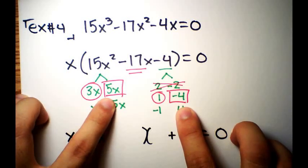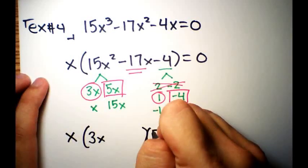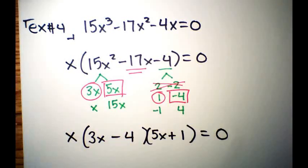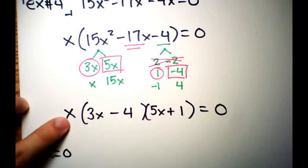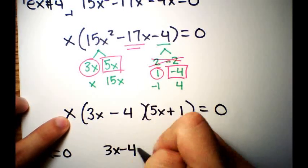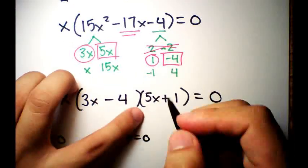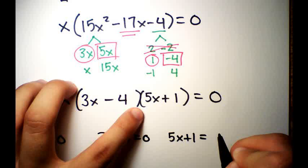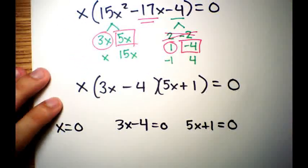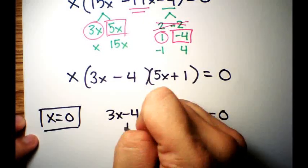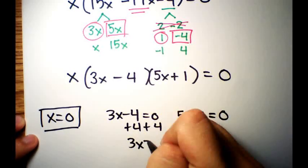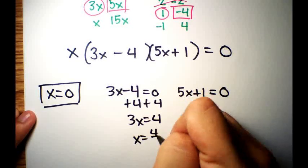Don't forget the factored-out x also sets equal to zero. You now have three equations: x = 0, 3x + 1 = 0, and 5x - 4 = 0. From 3x + 1 = 0: subtract 1 and divide by 3, giving x = 1/3... wait — add 4 and divide by 3 for 5x - 4 = 0, giving x = 4/3.